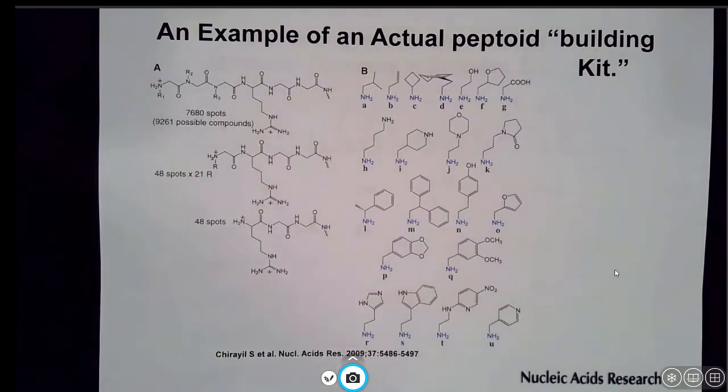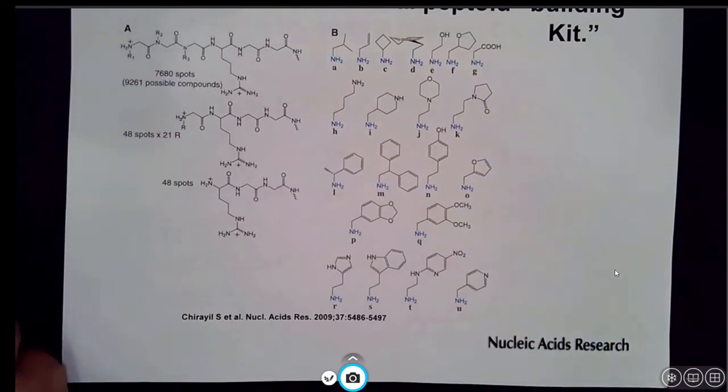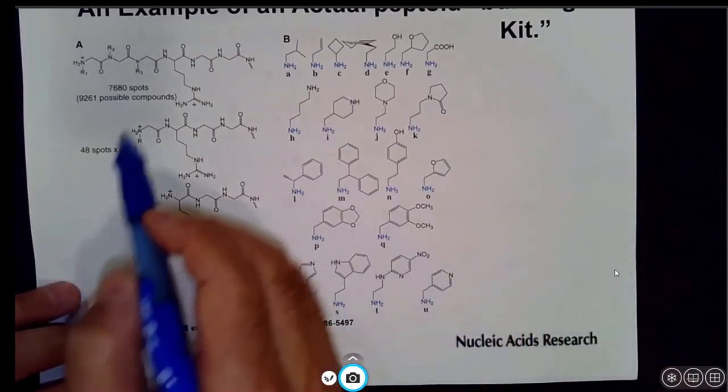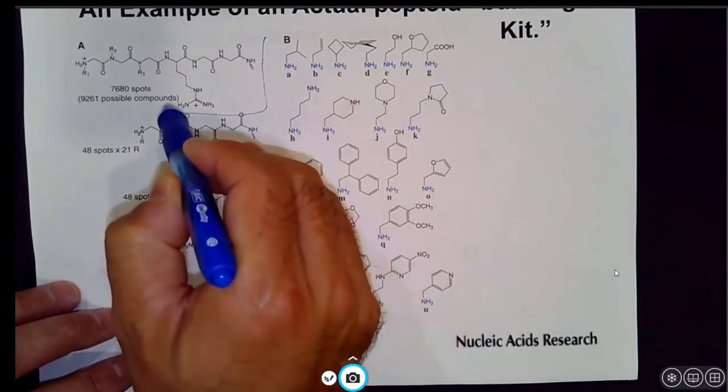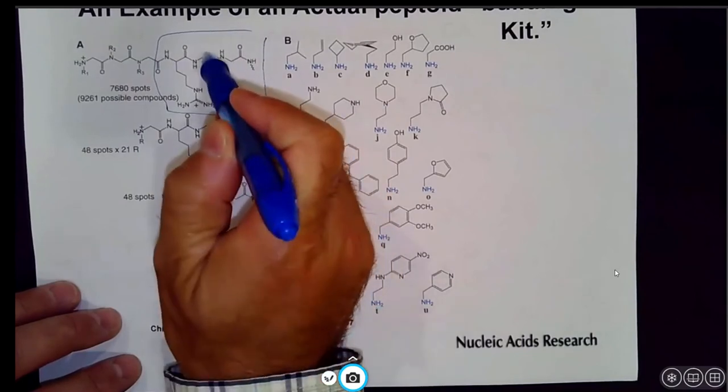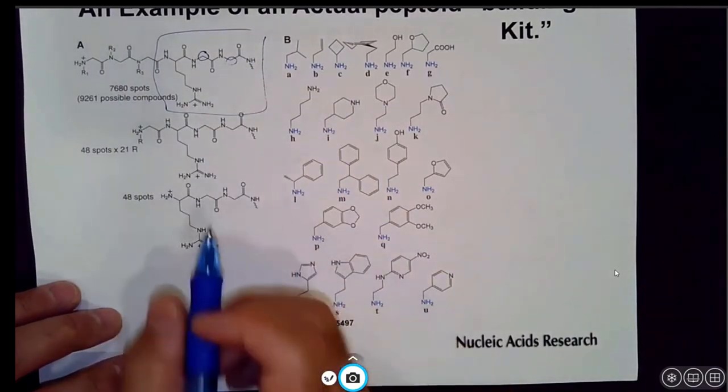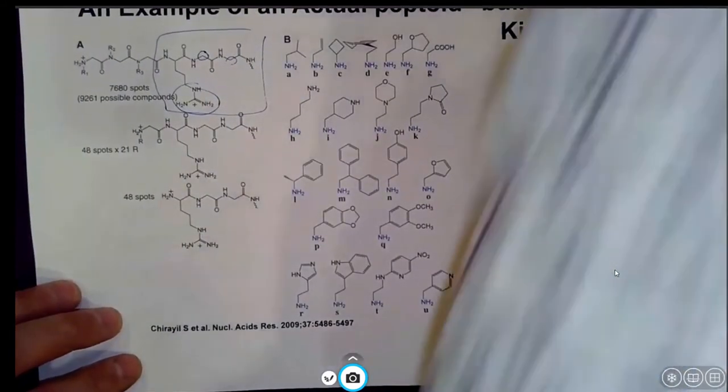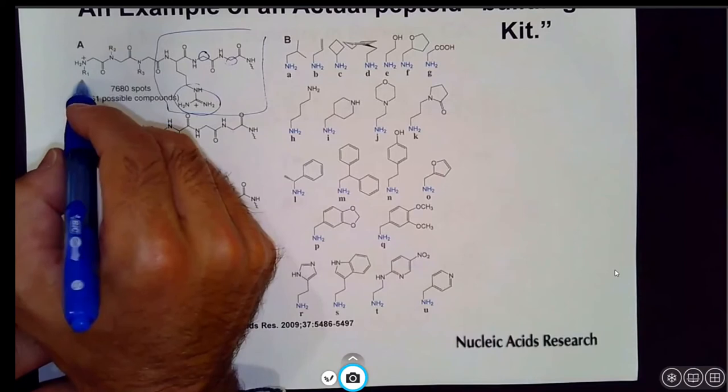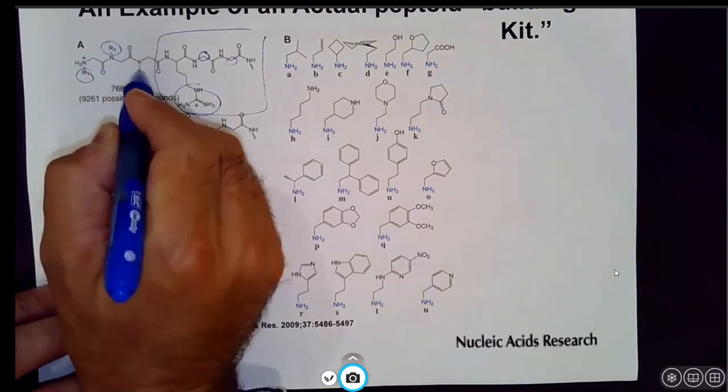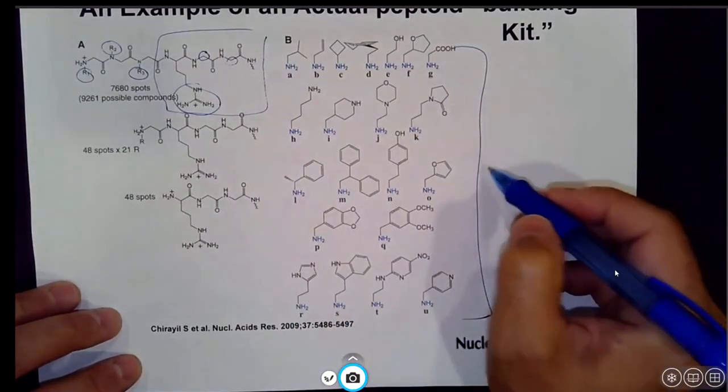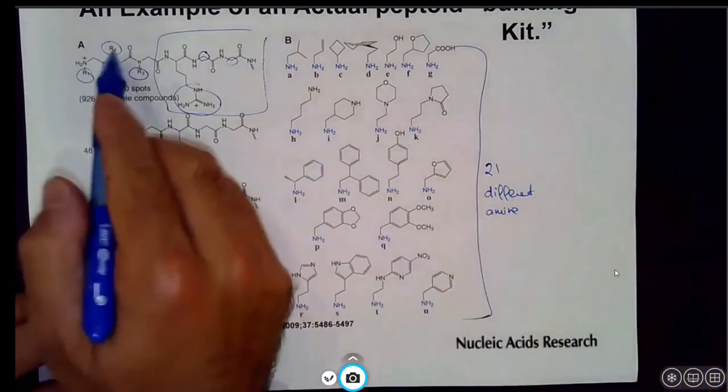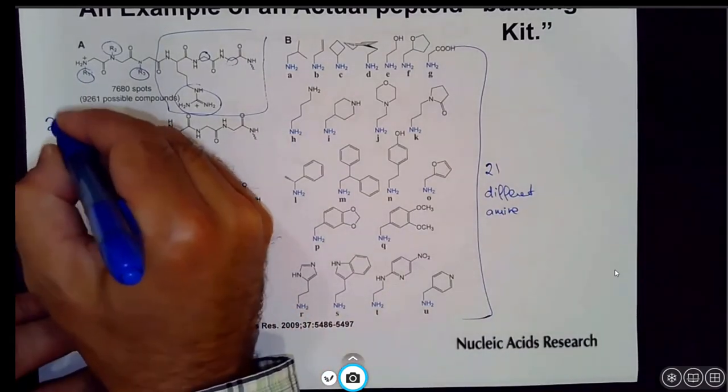An example of an actual peptoid building kit has been synthesized. This was done by Kodadek and co-workers at UT Southwestern. Essentially what they had done is they took this core molecular structure here which contains a couple glycines - you can see there are no R chains there, or there is, it's the hydrogen. They have an arginine in here. Then what they did was they made a peptoid-based molecule on that, and the peptoid-based molecule had different R groups at three different positions: R1, R2, and R3. They had all these different diverse amines - they had 27 different amines.